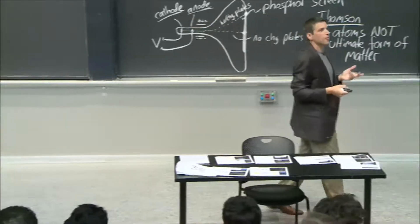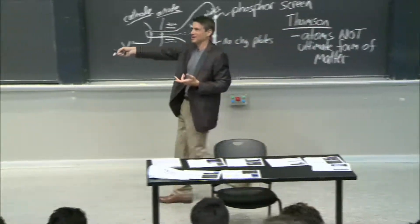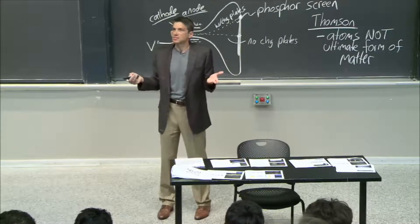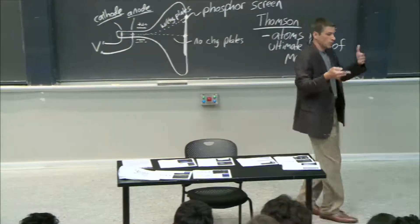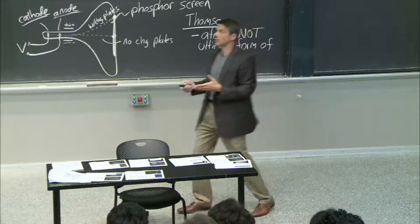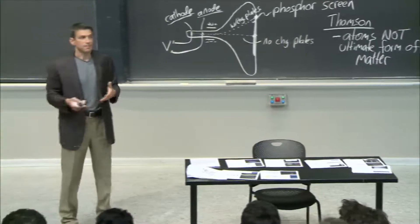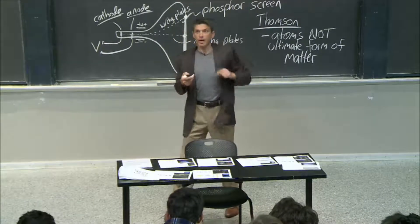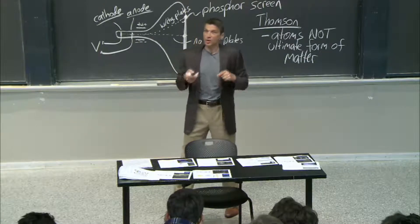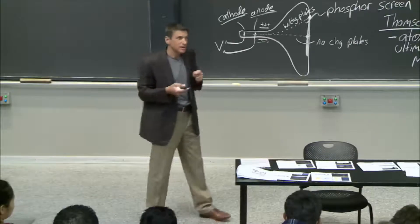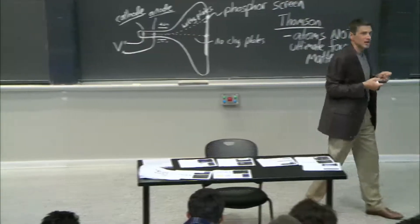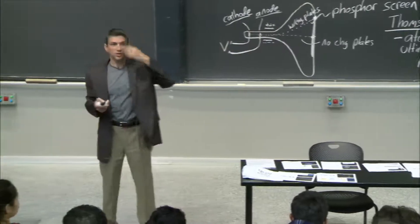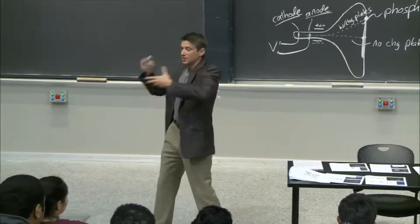Electron painting had never been done before because we didn't know that we had these electrons. But as soon as we knew, boy, did that launch a completely new era of screens. We don't use cathode ray tubes anymore — ask your grandparents, they'll tell you about cathode ray tube TVs. But we still paint with electrons today. Your OLED screen is still simply an electron-based painting tool. We're just pumping the electrons into the phosphor in a different way, and we'll be talking about that as we go through the rest of this week, understanding how electrons interact with light coming in and out of an atom.